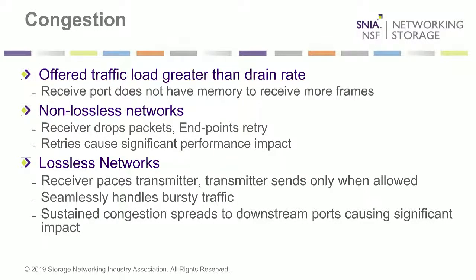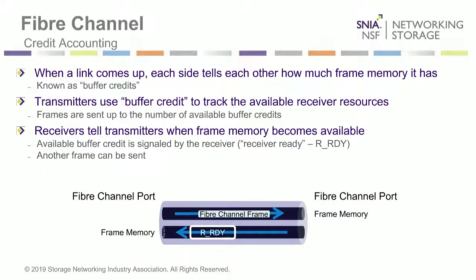In a lossless network, the receiving port paces the transmitter — the transmitter cannot send a frame unless the receiver permits it. The big advantage is that it handles bursty traffic very nicely because frames are held in the transmitter's buffer and not dropped. Once the receiver is able to receive the frames, they can be quickly sent out without involving the endpoints. Of course, if the condition is sustained — meaning the transmitter is unable to send packets for a long enough time — you can have a situation that leads to performance impact and, in worst case scenarios, application failures.